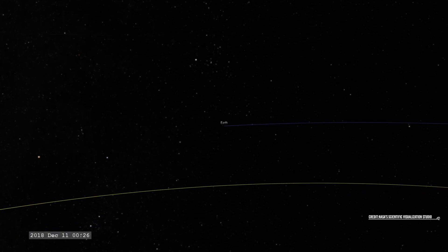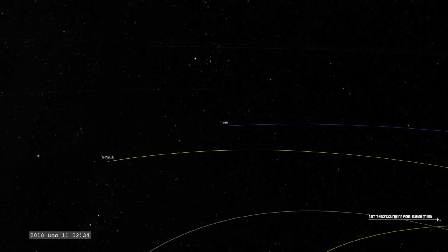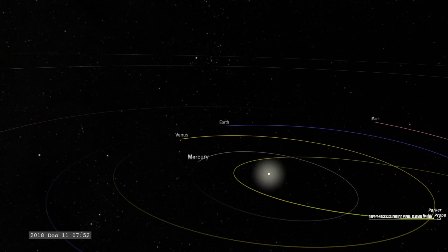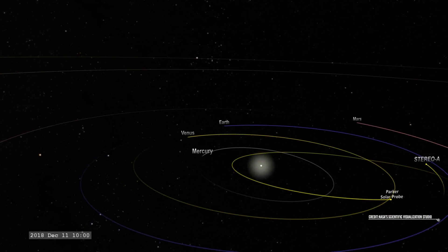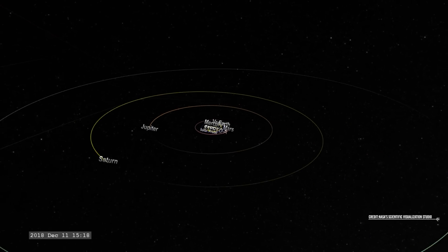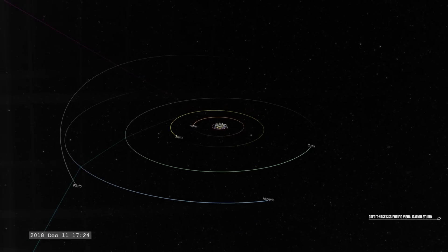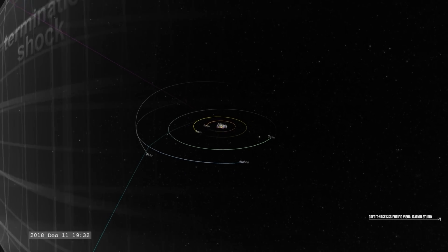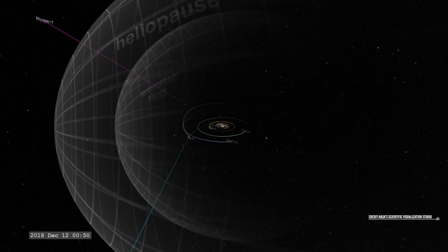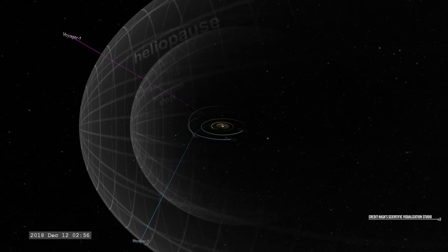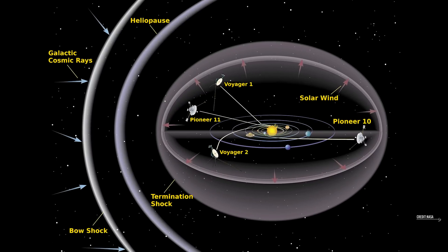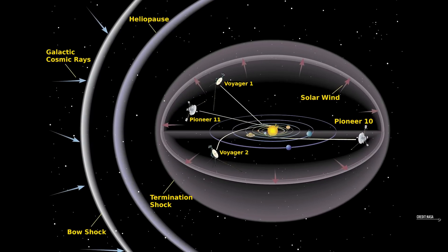This area is called the termination shock front and is considered the boundary of one of the last outer edges of the sun's influence. It is a more or less spherical area or region where the solar wind slows down because of the interactions with a local interstellar medium in its path in the region known as the heliosphere. The termination shock front is situated between 75 and 90 astronomical units from the sun. However, this is only an approximation as it expands and contracts due to the changes in the speed and the pressure of the solar wind. Voyager spacecraft ultimately traversed this region in 2005.